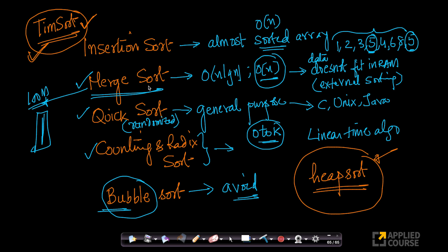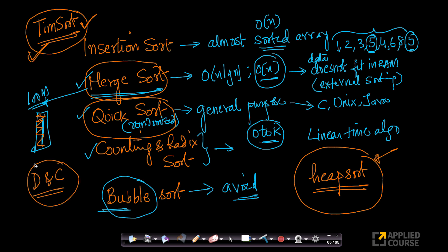Why did we start with sorting? Sorting is certainly an important problem in the real world, but we also learned so many key techniques because of it — divide and conquer in merge sort and quick sort, recursion, recurrence relations, and how to sort data that doesn't fit into RAM. Sorting gave us a good framework to learn more advanced algorithms and data structures that we'll cover in later parts of this course.